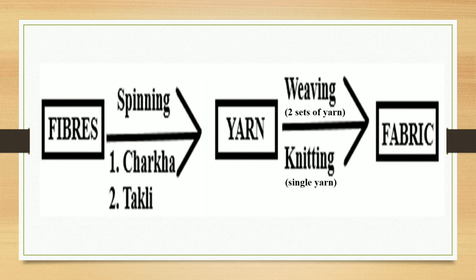Let us summarize what we have learnt in this video. The process of making yarn from fibers is called spinning. Two hand-operated devices used for spinning are charkha and takli. Yarn is arranged to make a fabric. When two sets of yarn are used, it is called weaving. When a single yarn is used to make a fabric, it is called knitting.